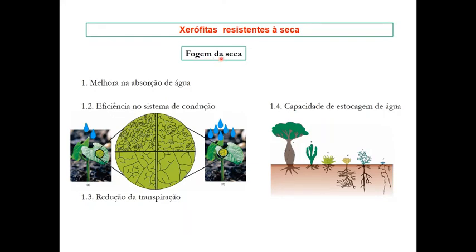Como estratégia das plantas que fogem à seca, há a melhoria da absorção de água. Essas plantas têm um incremento no sistema de condução. Plantas de feijão cultivadas com pouca água versus muita água mostram que as sob estresse hídrico desenvolvem maior quantidade de feixes vasculares e maior densidade de estômatos, enquanto as com regime hídrico regular têm venação menos densa e menos estômatos. Outra estratégia é a redução da transpiração, com cutícula muito espessa, estômatos encriptados e alta densidade de tricomas que auxiliam na reflexão dos raios solares.